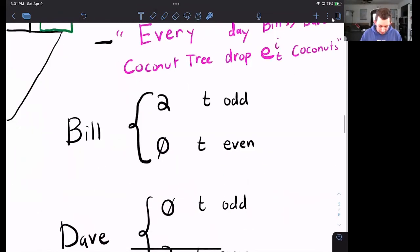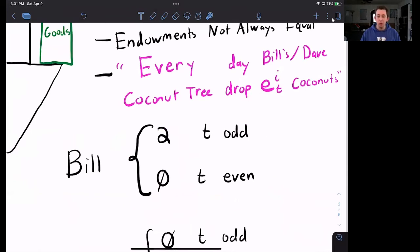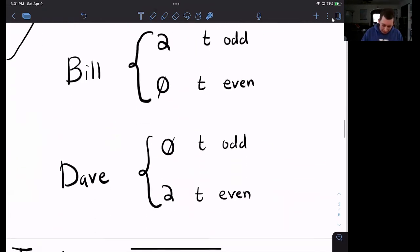The way we are going to define endowments is we are going to give Bill two coconuts if the period is odd, and zero coconuts if the period is even, and Dave is going to be the opposite. So there's always two coconuts being dropped every day, but they alternate between being given to Bill and being given to Dave.